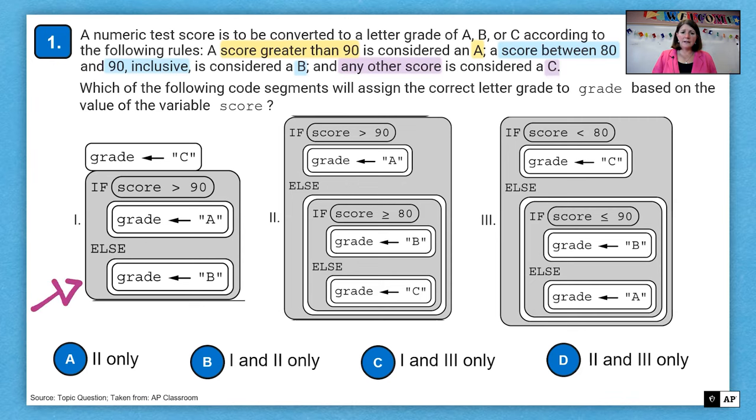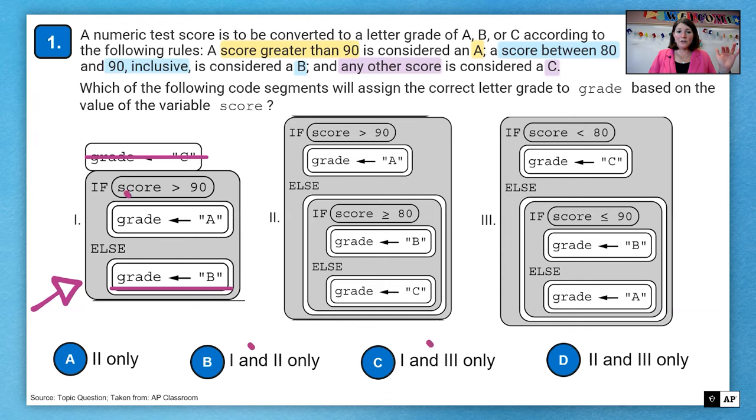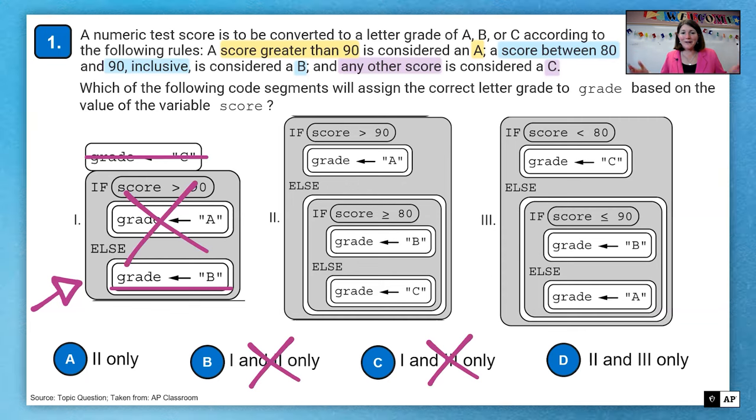If we take a look at number one, we see that it assigns B in the else. This is an if-else. That means one or the other of the options will be processed in an if-else. Therefore, the grade of C will be wiped out if the grade is not greater than 90. So this is not a good choice. That eliminates two of our answers already.